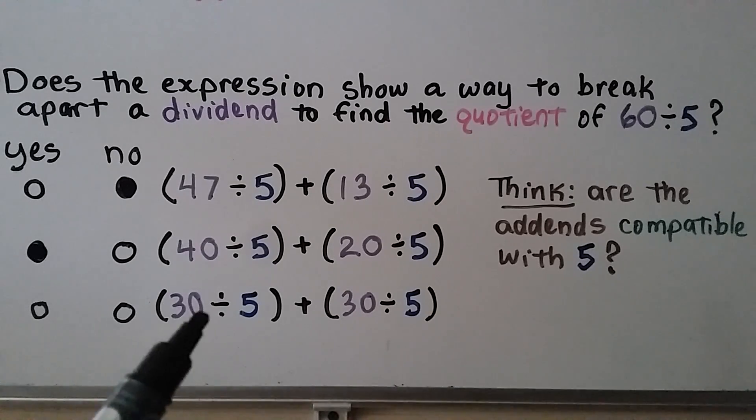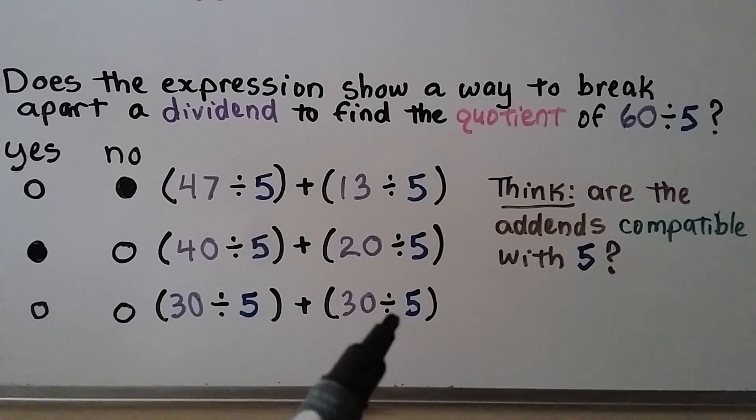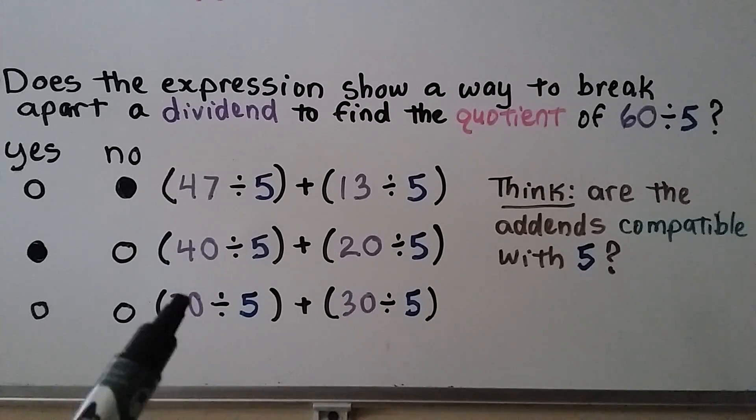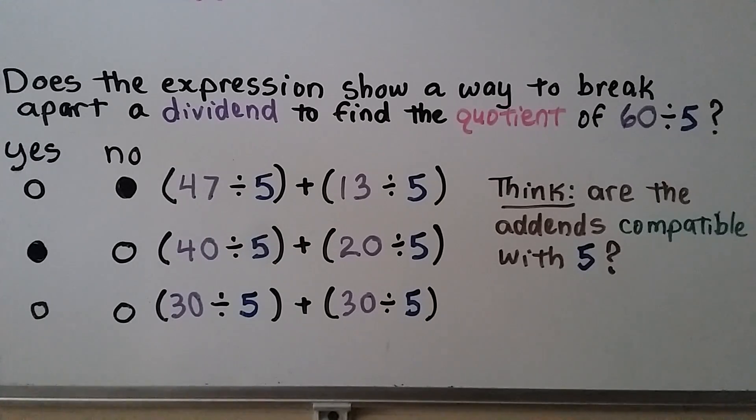What about 30 divided by 5 plus 30 divided by 5? Are these addends compatible with 5? And do they equal the dividend 60? If you said yes, you're right.